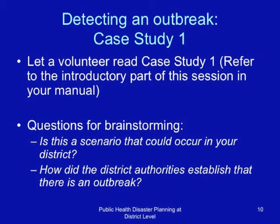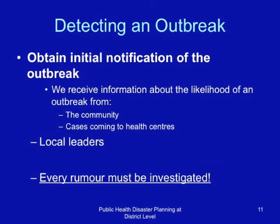Is this a scenario that could occur in your district? And how did the district authorities establish that there is an outbreak? In detecting an outbreak, we have to obtain initial notification. We receive information about the likelihood of an outbreak from the community, from cases coming to health units, and from local leaders. We must have an effective early warning system linked to the communities. The golden rule is that every rumor must be investigated.